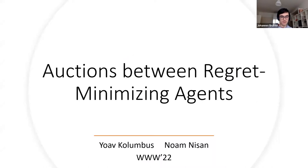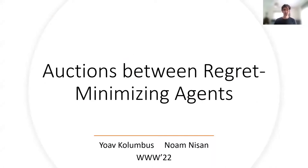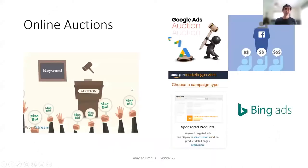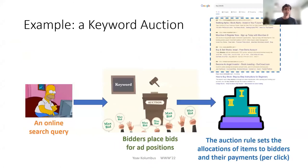We're going to talk about settings where several users interact over some online platform. These users are assisted by software agents that play the repeated game and optimize on their behalf. The types of games we'll focus on are online auctions, like the ones used by large internet companies to sell ad positions online. An important example are keyword auctions, like the ones we see on search results web pages.